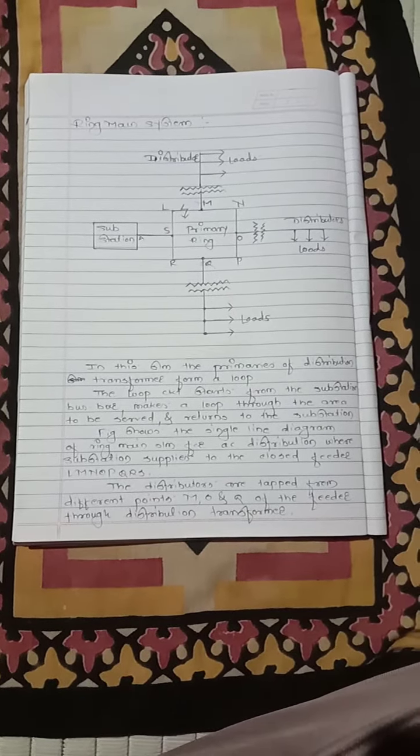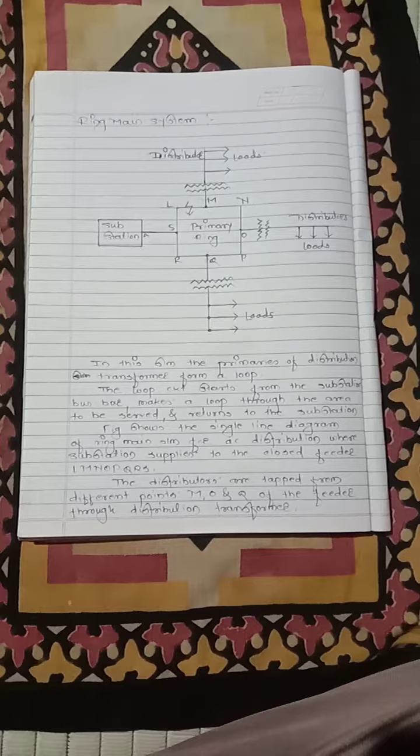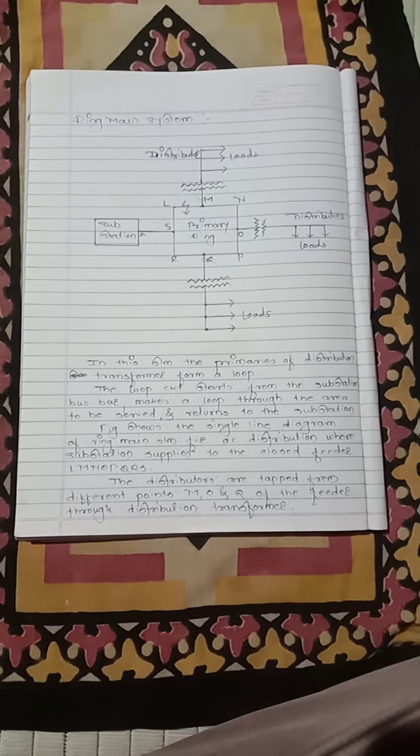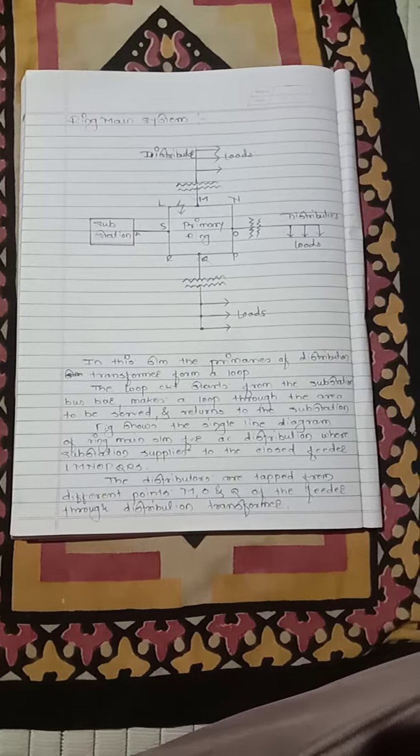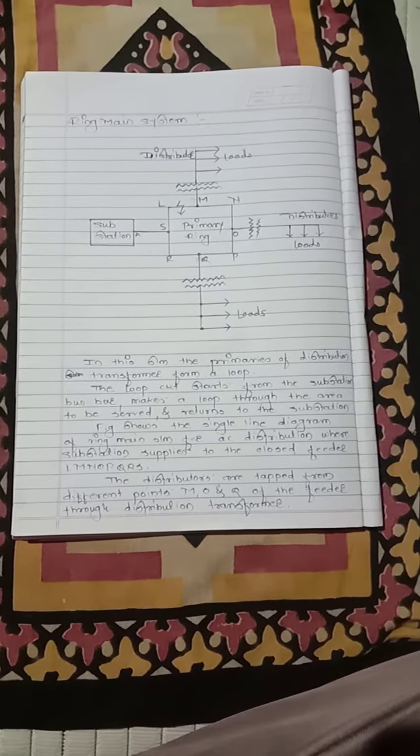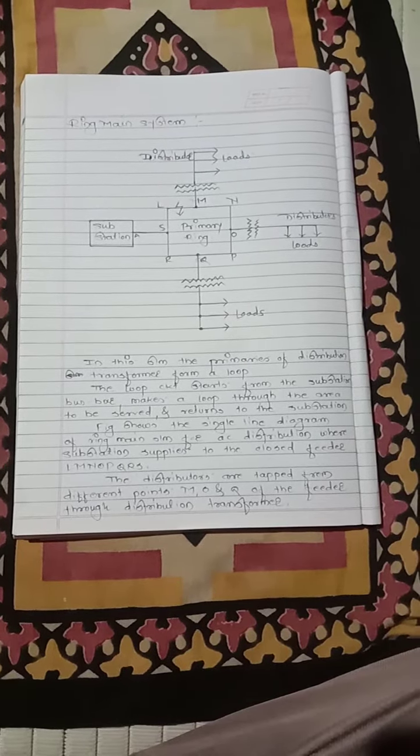The figure shows the single line diagram of a ring main system for AC distribution where the substation supplies to the closed feeder L M N O P Q R. The distributors are tapped from different points, that is M, O, and Q, as shown in the figure.